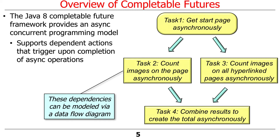Here's a very simple example, kind of like a stripped-down version of your next programming assignment. You're going to start a download asynchronously, and once the download of a web page completes, you're going to count the number of images on the current page asynchronously, and also count the images on all the hyperlinked pages asynchronously, then combine all the results together to make the total. Tasks 2 and 3 can't run until task 1 is done, and task 4 can't run until tasks 2 and 3 are done — it's like a data flow diagram.